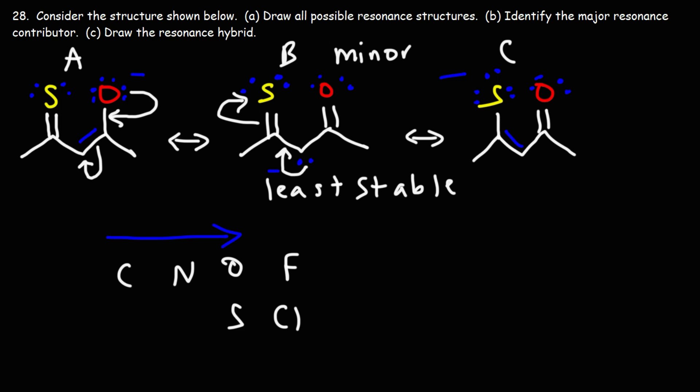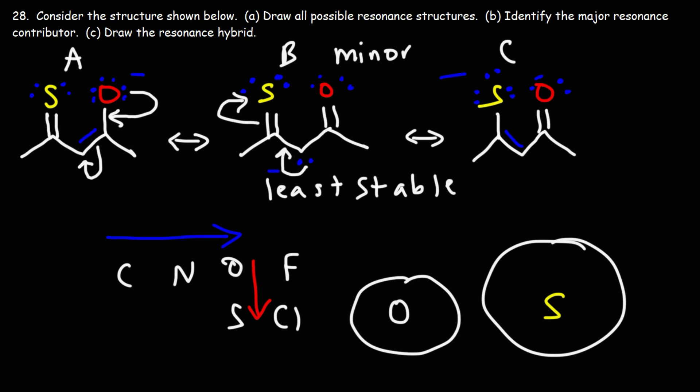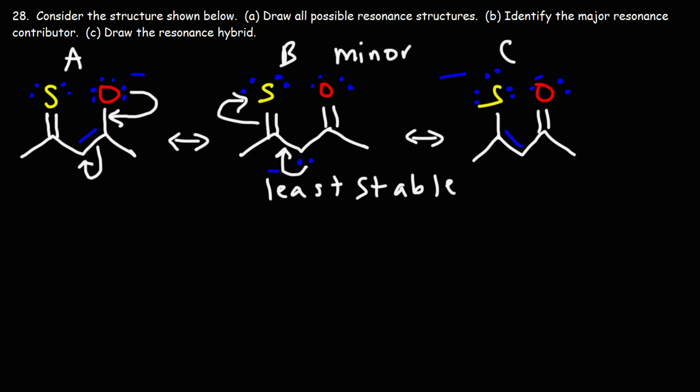Now, what about comparing oxygen and sulfur? Which of the two atoms can better stabilize the negative charge? Oxygen is a second row element; sulfur is a third row element. Sulfur is bigger, and so it has more volume in which it can disperse that negative charge. As a result, it's more stable to put the negative charge on a sulfur atom than the oxygen atom. When deciding where to put the negative charge to create the most stable structure, it's better to put the negative charge on the more electronegative atom, and on the atom that's bigger. The bigger the atom is, the better it can stabilize the negative charge.